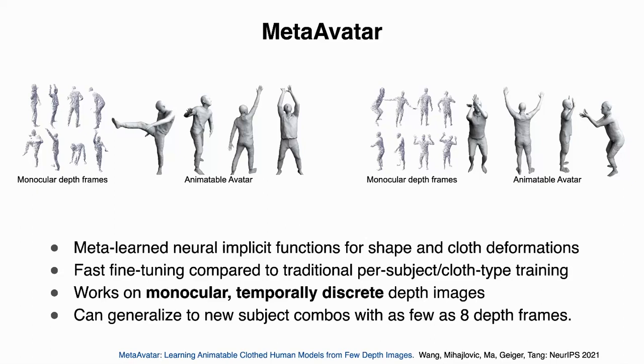Since our goal is to build a clothed human body model from very sparse observations, we need a strong prior. We use meta-learning method to learn a unified prior for how shape and cloth deform given different input poses. The meta-learned model can then be fast fine-tuned to adapt to unseen subjects. Essentially, it can generalize to unseen subjects with as few as 8 depth frames. In such a case, fine-tuning takes less than 2 minutes.